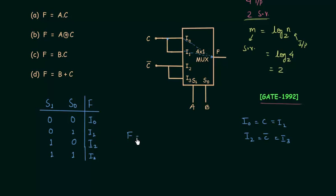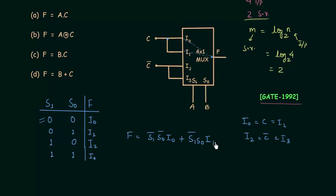Function f equals S1 complement · S0 complement · i0, plus S1 complement · S0 · i1, plus S1 · S0 complement · i2, plus S1 · S0 · i3. This is derived from the multiplexer truth table.